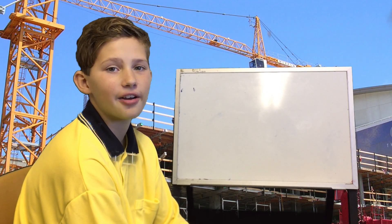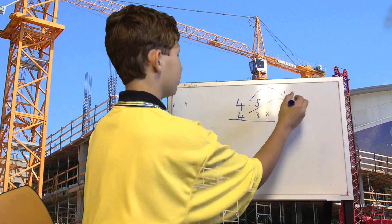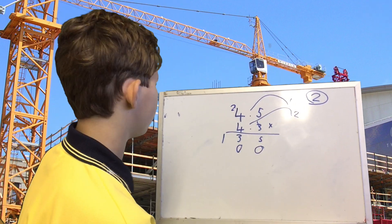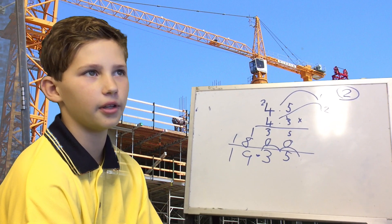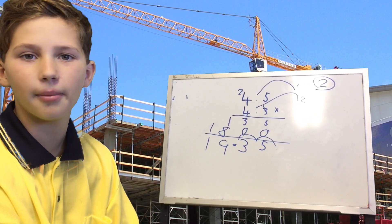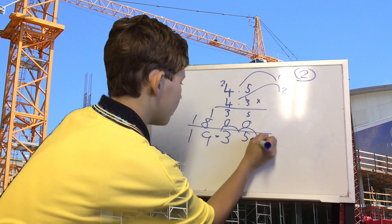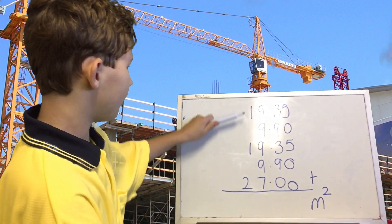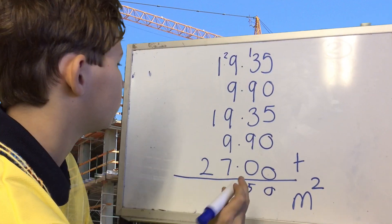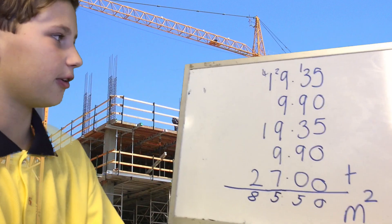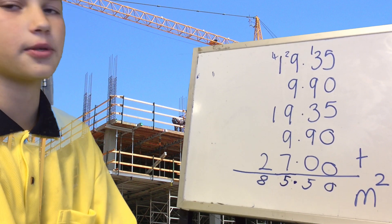To find the area, the formula is length times width. The area of bedroom one is 19.35 — and remember, always put your measurements — 19.35 metres squared. These are the areas of all the bedrooms. Once you've added all the areas of the bedrooms, we've got 85.5 metres squared.